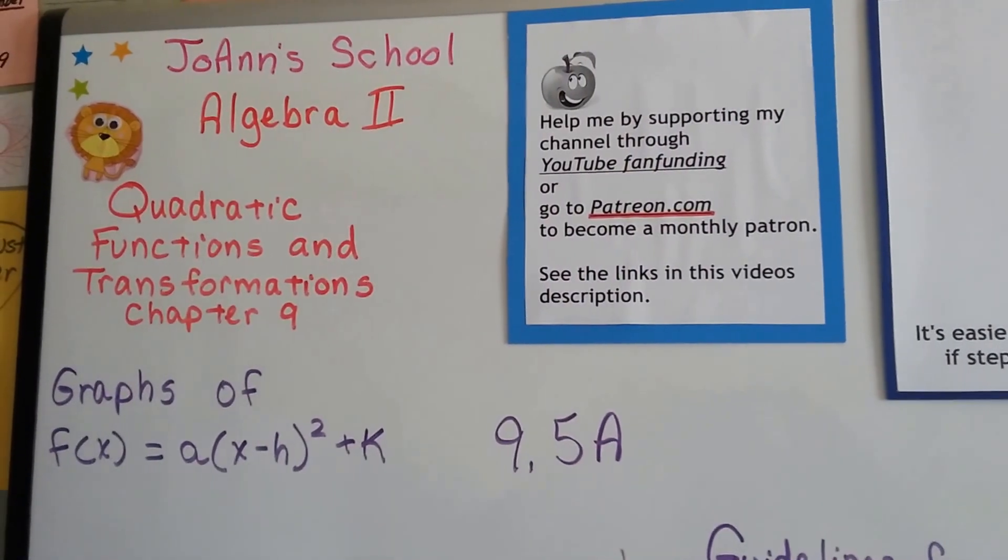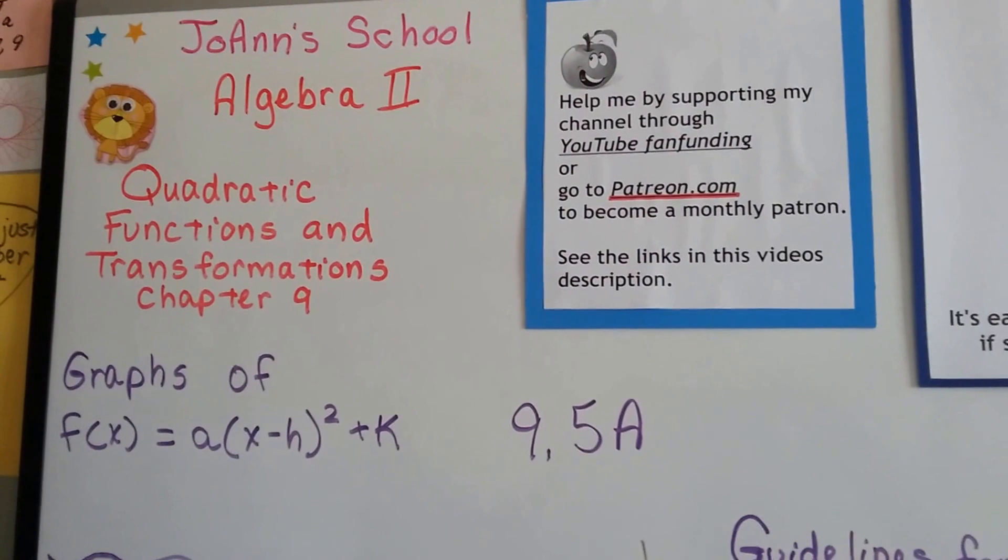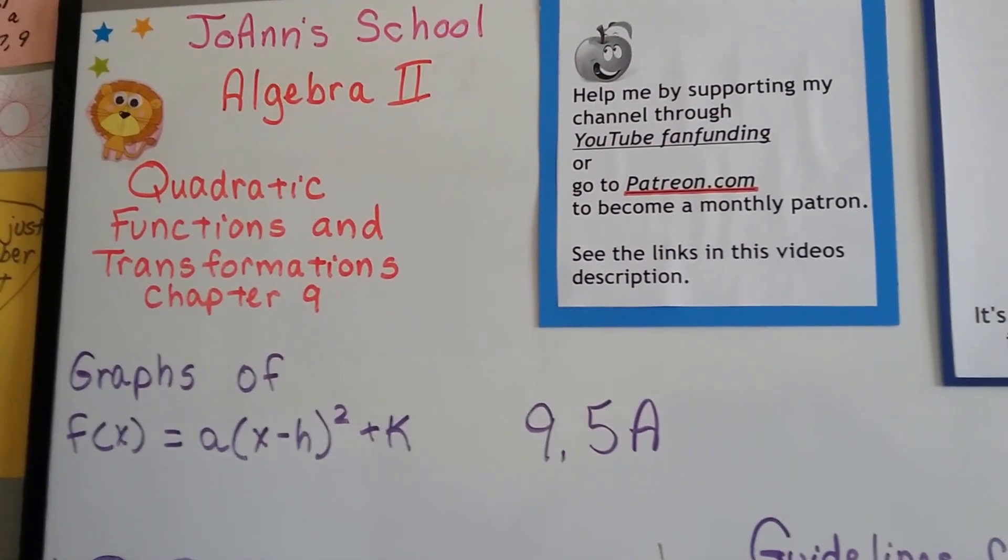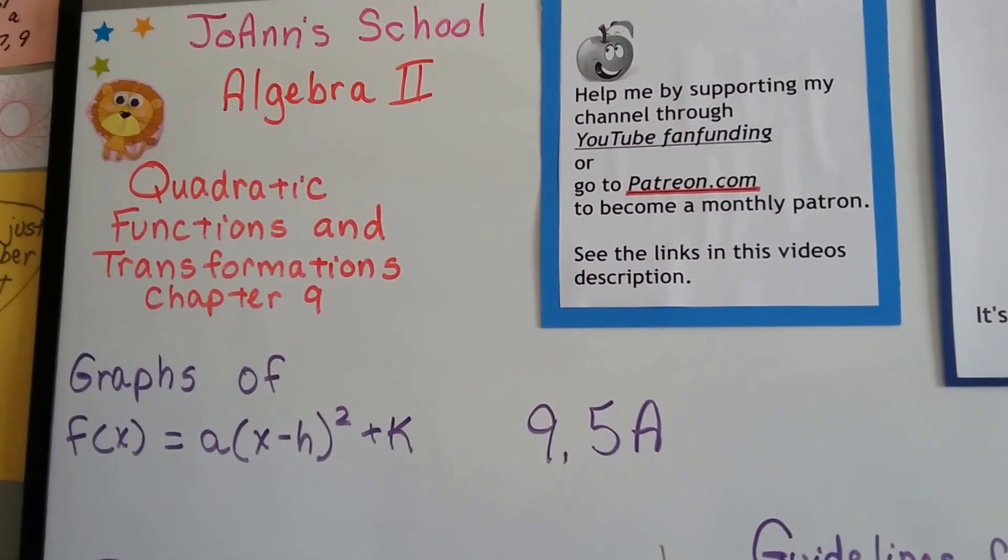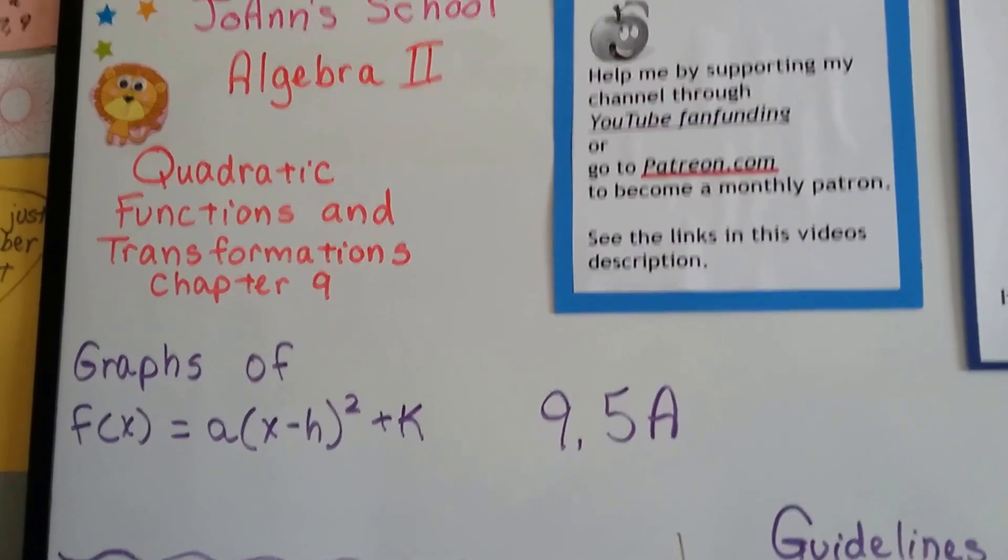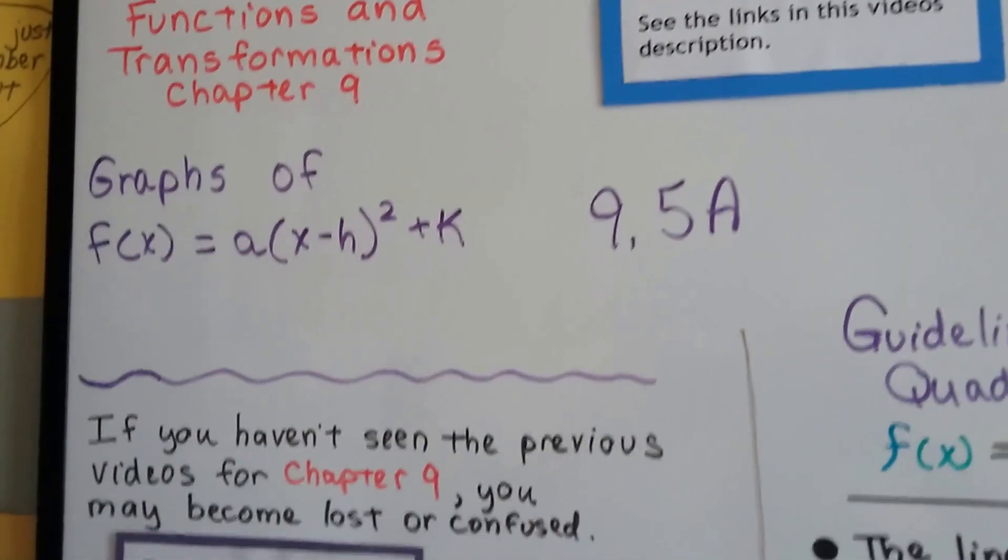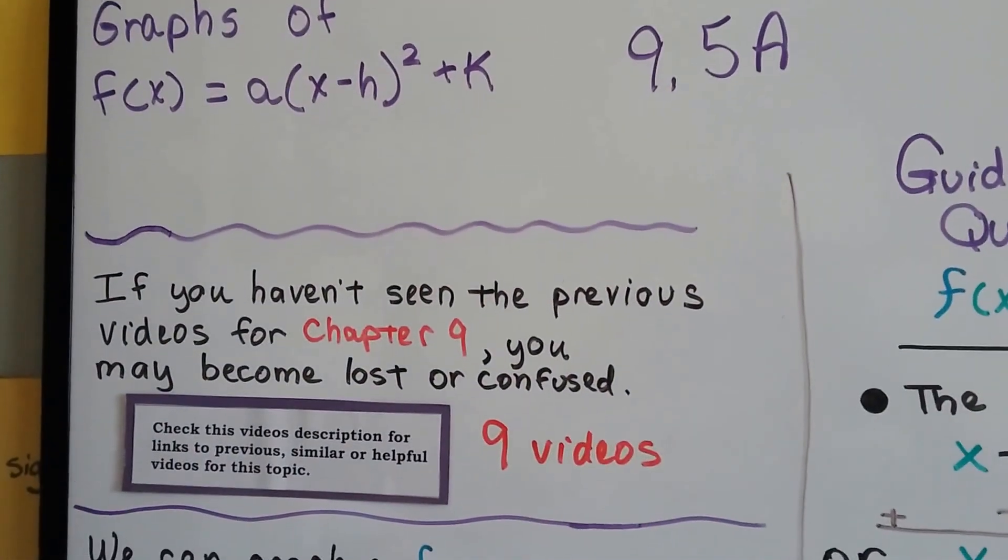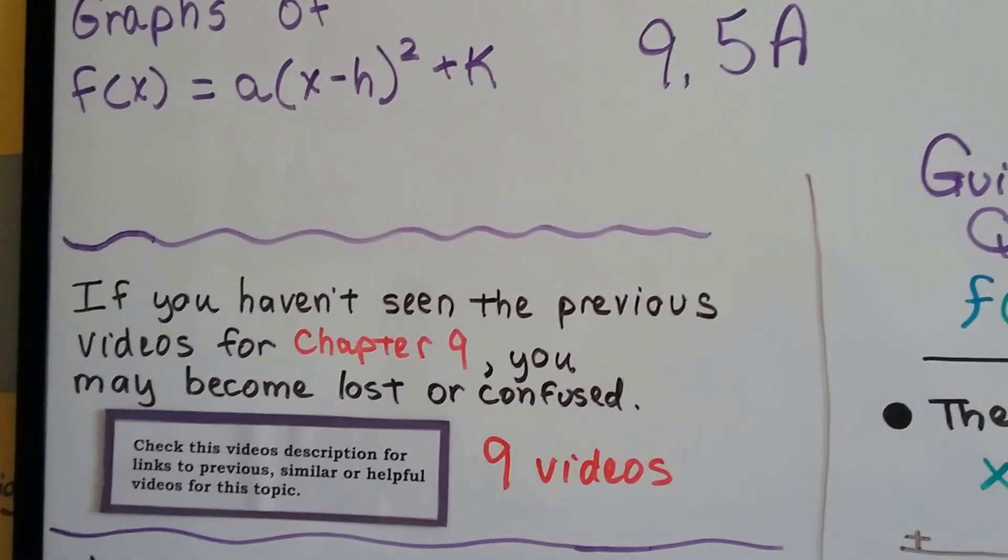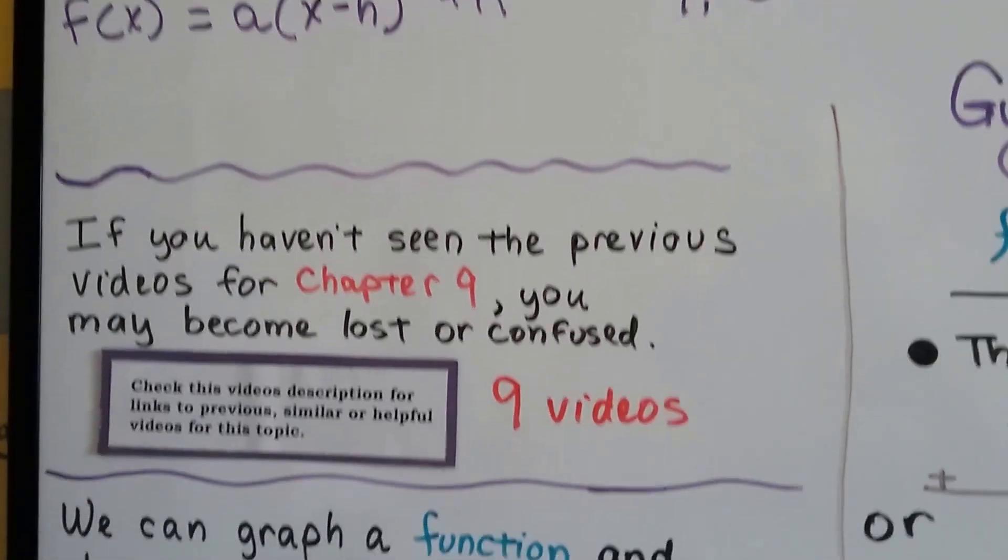We're now in Algebra 2, 9.5a, and we're going to talk about the graphs of quadratic functions. The function f(x) = a(x - h)² + k. We have nine previous videos, and if you become lost or confused during this one, my advice is to click on this description, watch the previous videos to catch up.